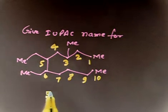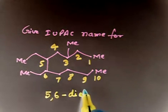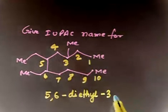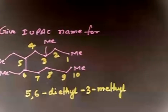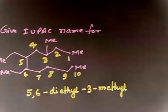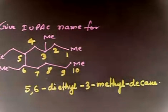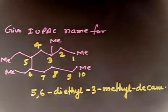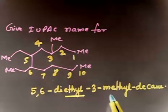You have 5, 6 diethyl. So, 5, 6 diethyl. And position number 3, you have methyl. So, 3 methyl. And this is a decane derivative. So, I have to write decane. Are you getting it? So, 3 methyl decane. So, 10 carbon. Because the word E comes first with respect to M. And that's why you have to write ethyl group first and then I have to write methyl.